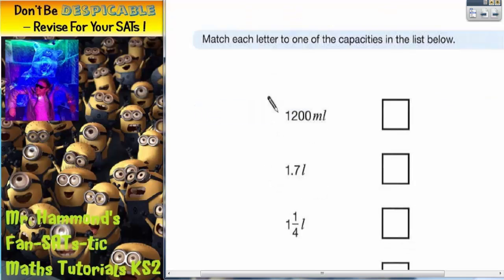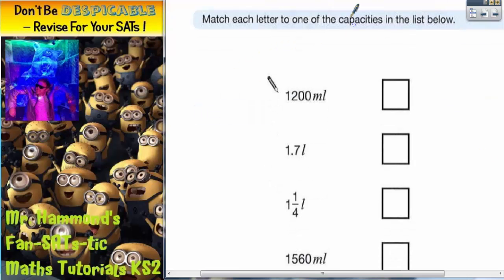And the scale goes from one litre to two litres. Let's have a look at what we've got to do. It says match each letter to one of the capacities in the list below. Remember capacity is just a posh word for the volume or the amount of a liquid.